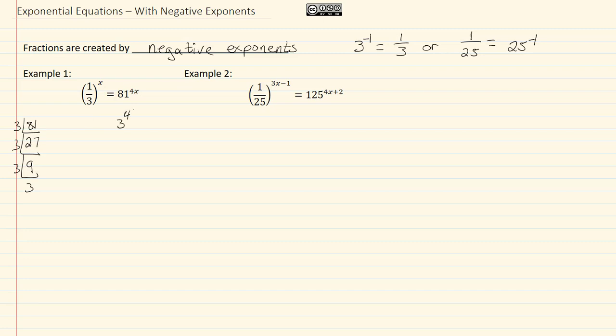So I'm going to have three to the fourth times four x. Now we're going to make use of the property we saw earlier and change that one-third to three to the negative one. So we have three to the negative x equals three to the four times four x. Now we have the same base, so I can solve this.